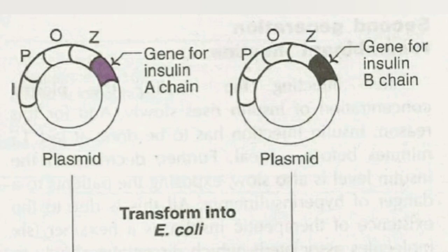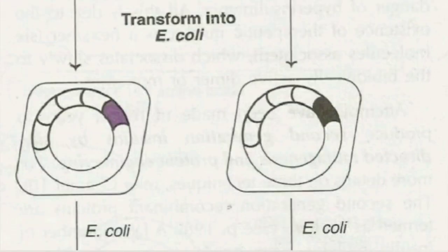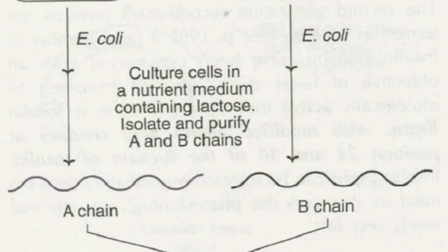The lac operon system consists of an inducer gene I, promoter gene P, operator gene O, and a structural gene for beta-galactosidase. These are used for the expression of both genes — the gene for insulin A chain and the gene for insulin B chain — which are then transformed into E. coli cells.